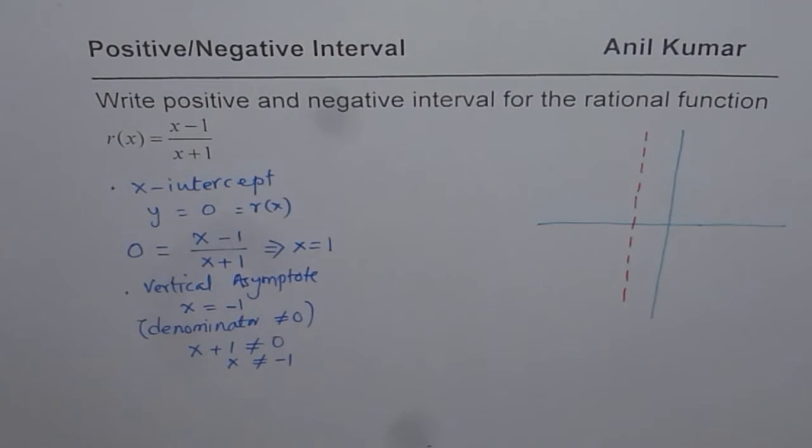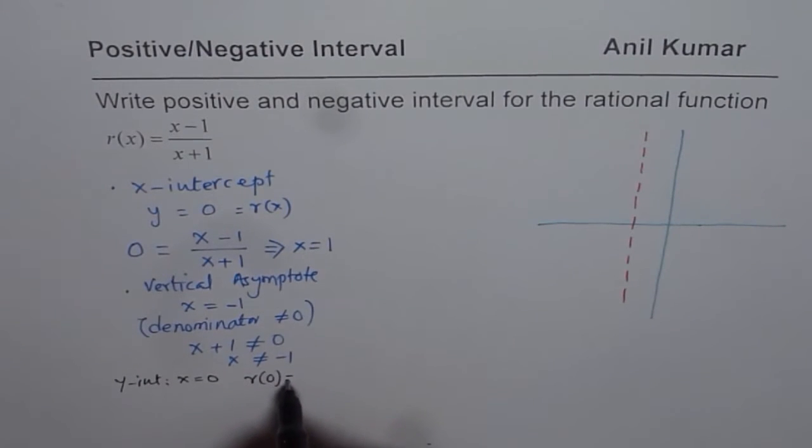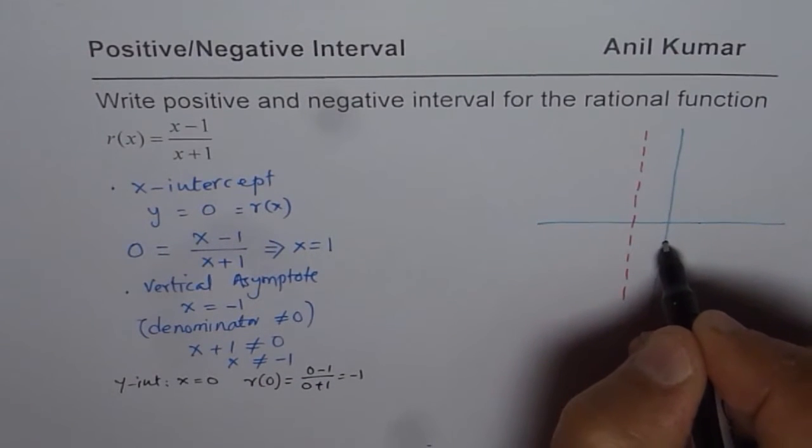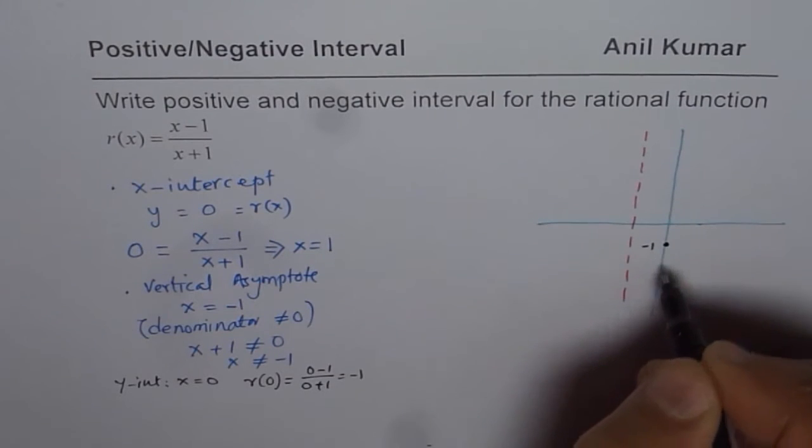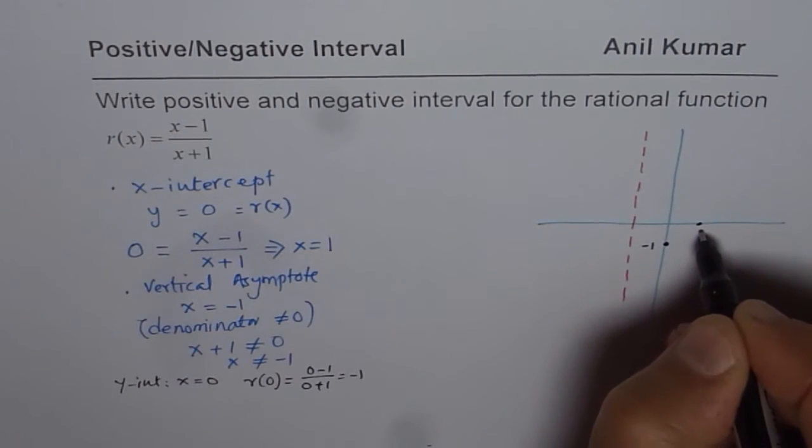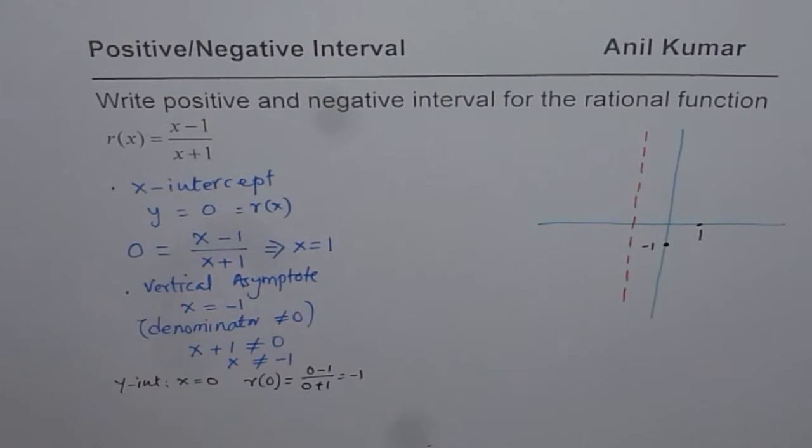Now it is easy to find the y-intercept. So let us calculate the y-intercept also as it is going to help us to sketch the graph. So y-intercept is when x equals to 0. So if I put x equals to 0, I get r(0) equals to 0 minus 1 over 0 plus 1, which is negative 1. So we can say this is negative 1, which is the y-intercept. This is positive 1, which is the x-intercept.